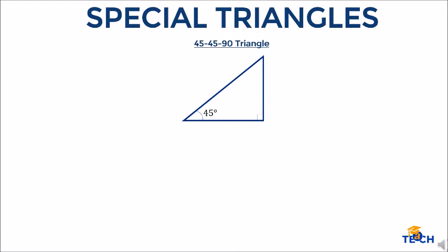This is the 45-45-90 triangle. It is a special right triangle that has two 45-degree angles. If one leg of this triangle is 1, then the other leg must also be 1, and the hypotenuse is square root of 2.